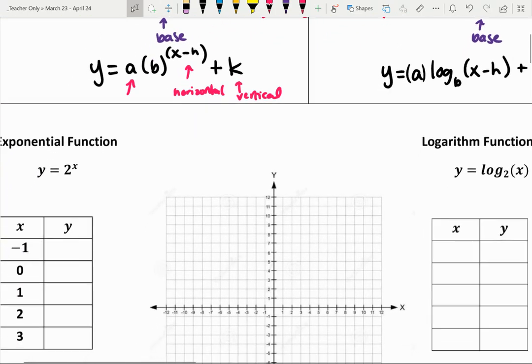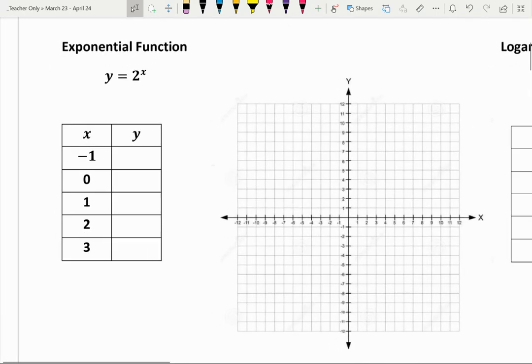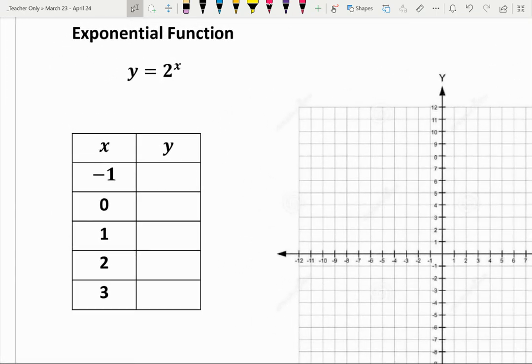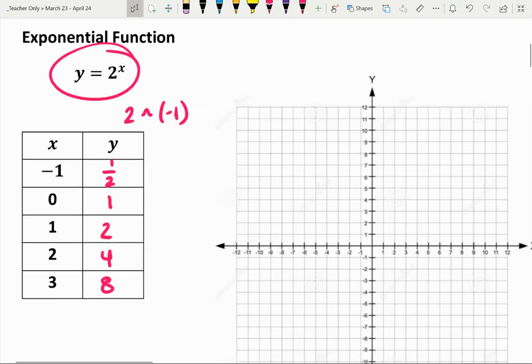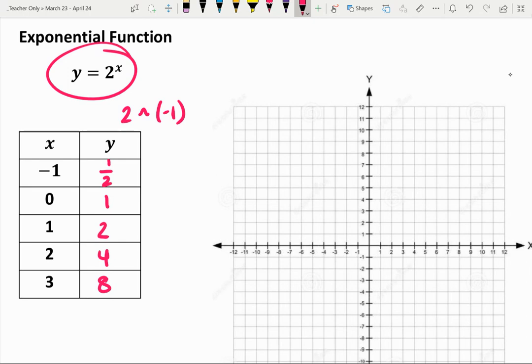So let's remind ourselves of exponential functions here. Remember this is raising something to a power so if we're doing this in a calculator like a TI calculator we would use that little caret key there. If we substitute values in y equals 2 to the power of x, so 2 to the power of negative 1 we actually get 1/2, 2 to the power of 0 is 1, 2 to the power of 1 is 2, 2 to the power of 2 is 4, and 2 to the power of 3 is 8. So again it's just a matter of substituting values and graphing.